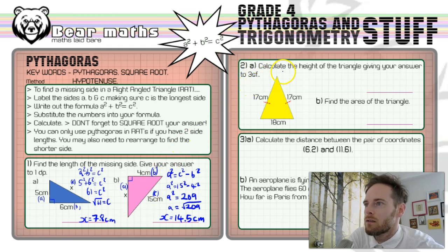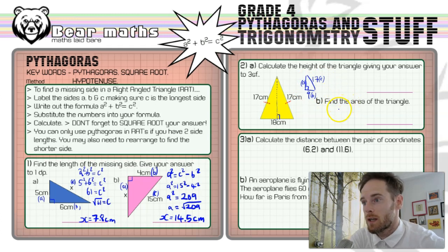Now question number two, A asks us to calculate the height of a triangle, giving answer to three significant figures. Now the height is this distance here from the apex or the top point of the triangle to the base. Now that's going to cut the triangle in half. The base is now cut in half. So we've got two 9 centimeter lengths here. This is our longest side. And you hopefully can see now we've got a right angle triangle. You can ignore half of it. We've got a right angle triangle that is 17 centimeters and 9 centimeters in length. And then we want to work out what this is. So this is going to be C, this is going to be B, and this is going to be A. And that's Pythagoras in action. We're working something out for a purpose.